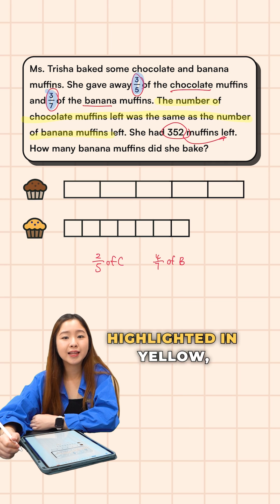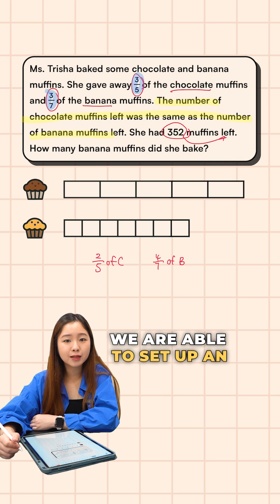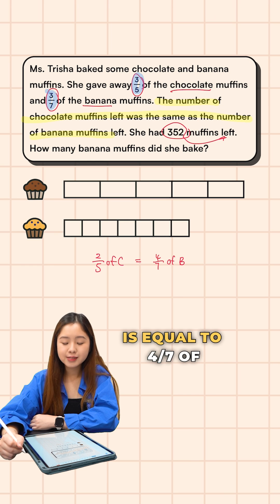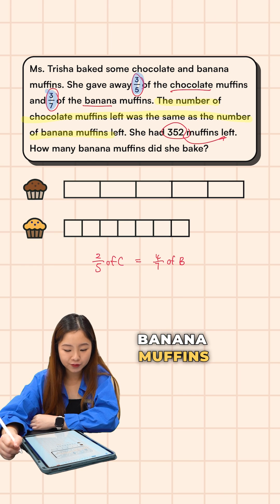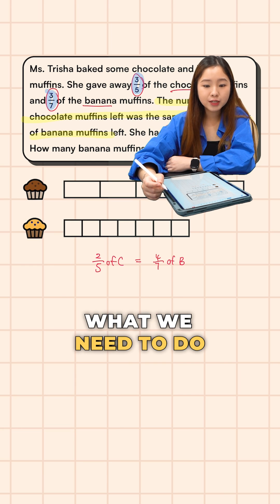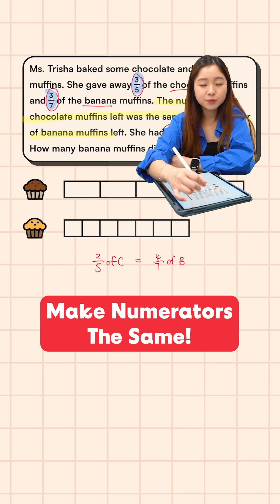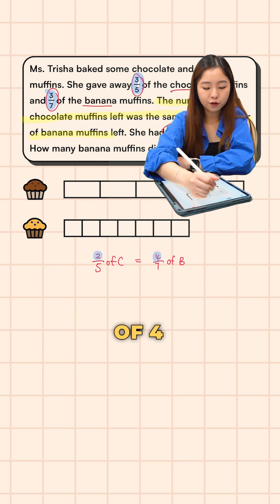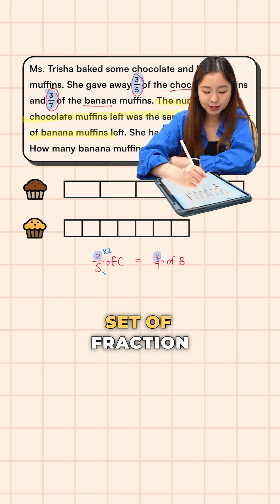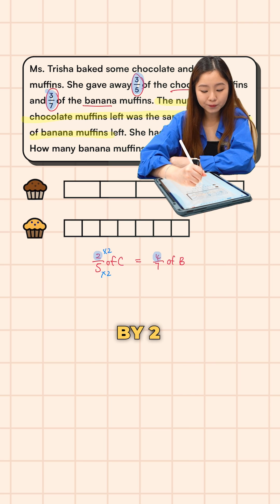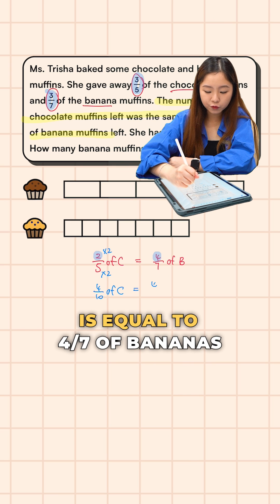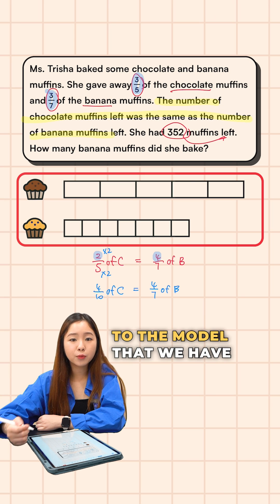Because of the statement highlighted in yellow, we are able to set up an equal fractions equation where two-fifths of the chocolate muffins is equal to four-sevenths of the banana muffins. With equal fractions, what we need to do is make the numerators the same. We have a numerator of two and a numerator of four, so we multiply the first fraction by two. Now we have four-tenths of chocolates equal to four-sevenths of bananas.